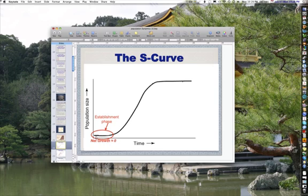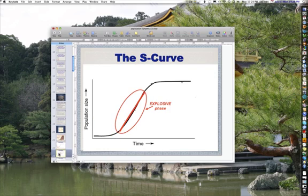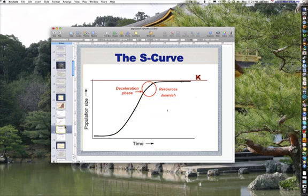And you can barely see any growth here at the beginning of this population. Then it moves into the explosive phase where it's almost linear and very steep, changing rapidly. Then there's a deceleration phase as resources diminish because this is a density-dependent population. The resources are going down.